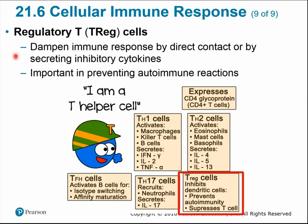Regulatory T cells regulate other aspects of the immune response, dampening or hindering it so it doesn't get carried away and start killing the body's own cells. They are important in preventing autoimmune reactions and can inhibit dendritic cells or suppress other T cells.